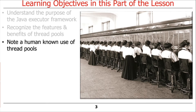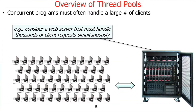I'll give you a human-known example of a thread pool, which you've probably dealt with quite a bit over time. Here's the context: concurrent programs are often required to handle a large number of clients. Consider a web server that has to handle thousands of client requests simultaneously.